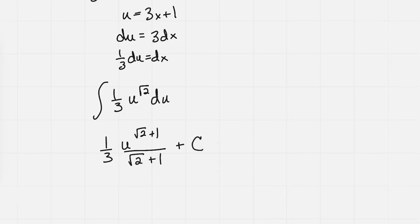And then I'm going to bring back in what my u sub was. So I have 1 third times the quantity, and the numerator is 3x plus 1, all to the square root 2 plus 1 power. All of that over square root 2 plus 1. And then I could bring the 3 into the denominator there, but I'm going to just leave it like this, plus my c.